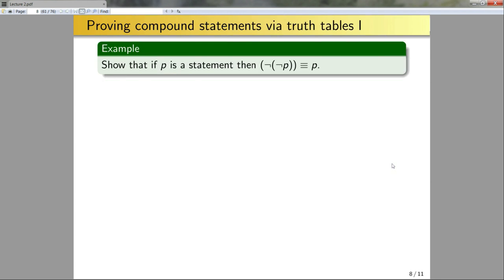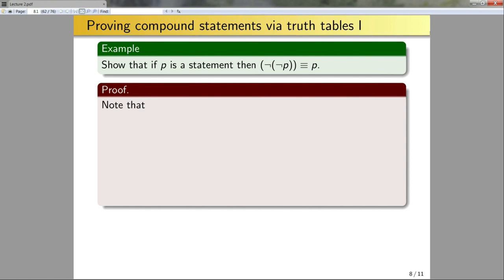Now let's look at proving compound statements via truth tables. Show that if P is a statement, then ¬¬P is equivalent to P. This is the logical equivalent of saying 'I'm not not it' — the double negation. How would I prove this statement? Instead of just giving you the truth table, let's derive it.